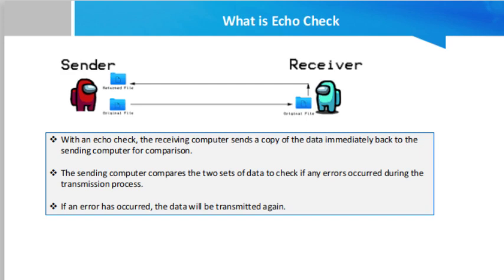When data is sent to another device, this data is sent back again to the sender. The sender's computer compares the two sets of data to check if any errors occurred during the transmission process. This is not very reliable — if the two sets of data are different, it is not known whether the error occurred when sending the data in the first place, or when sending the data back for checking. However, if no errors occurred, it is another way to confirm that the data was transmitted correctly.